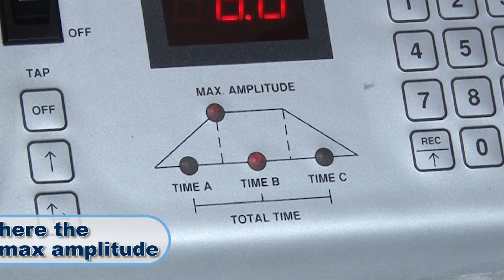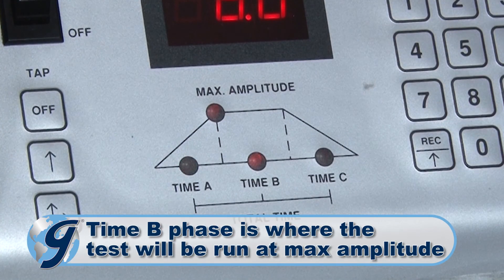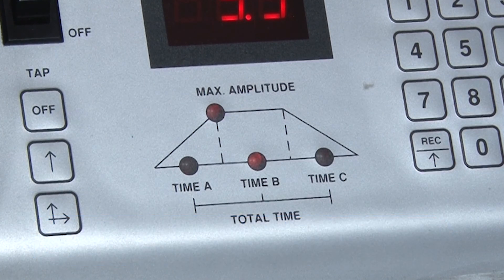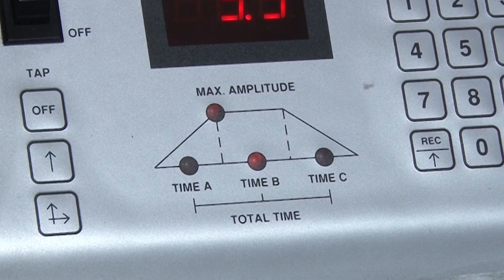The Time B phase determines the time that the test will run at the programmed maximum amplitude setting. Most of the test time will be in this phase.